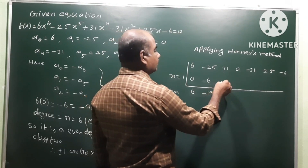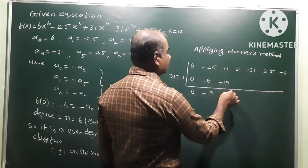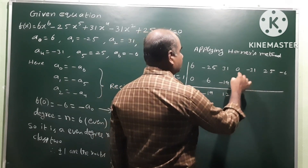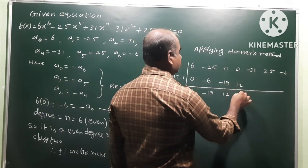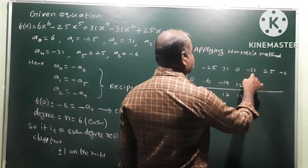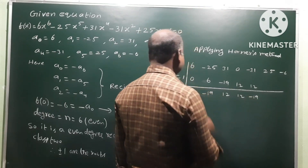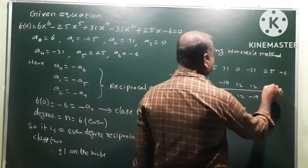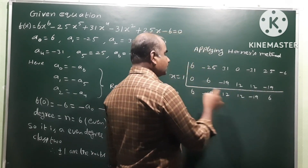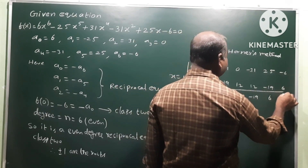For x = +1: 0 plus 6 is 6; 1×6 is 6; -25 plus 6 is -19; 1×(-19) is -19; 31 plus (-19) is 12; 1×12 is 12; -31 plus 12 is -19; 1×(-19) is -19; 25 plus (-19) is 6; 1×6 is 6; plus 6 minus 6 equals 0. Remainder is zero.